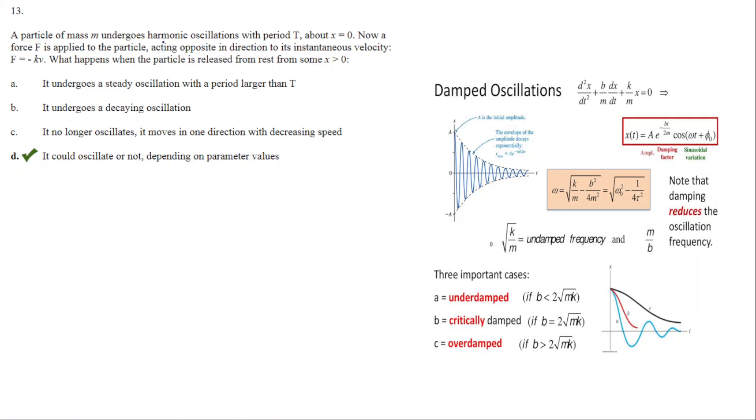A particle of mass m undergoes harmonic oscillation with period T about x equals zero. Now a force F is applied to the particle acting opposite in direction to its instantaneous velocity.